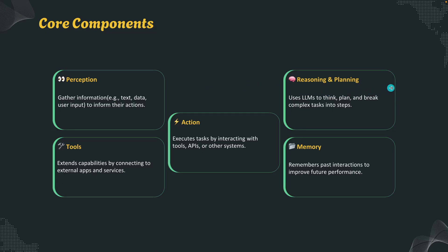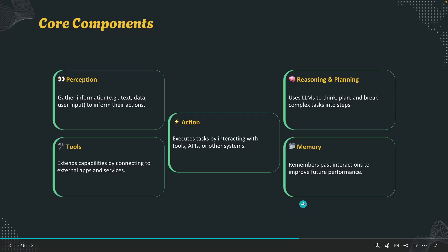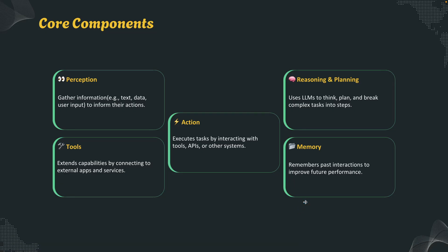Then we have reasoning and planning — this is where the magic happens. LLMs like GPT or Gemini break complex goals into smaller steps. Then we have the tools component, which gives your AI agents superpowers. You can build an internet search tool or a RAG tool that looks for information in specific documents — agents extend their capabilities using tools built with APIs and third-party apps. Then we have memory — they remember previous actions, allowing contextual responses for the user. And finally, we have action.